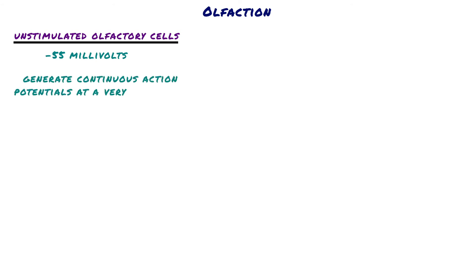The membrane potential inside unstimulated olfactory cells, as measured by microelectrodes, averages about negative 55 millivolts. At this potential, most of the cells generate continuous action potentials at a very slow rate.